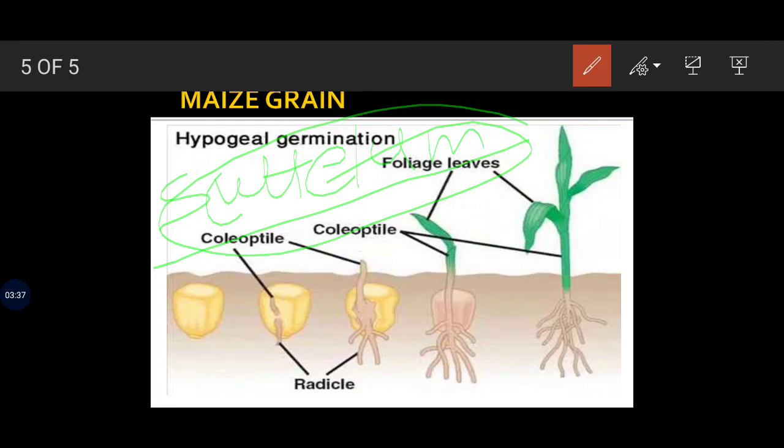The scutellum and endosperm are separated. There was a line of separation - a thin epithelial layer - which was the separator of the scutellum and the endosperm.